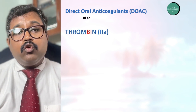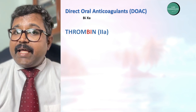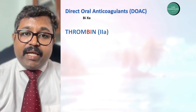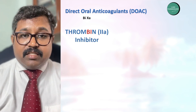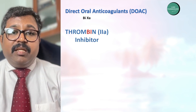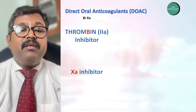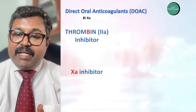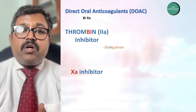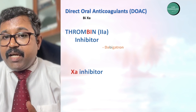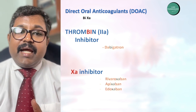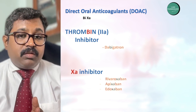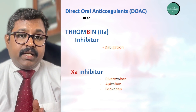We have two groups of direct oral anticoagulants: the thrombin inhibitor, also called factor 2A inhibitor, and the factor 10A inhibitor. Under thrombin inhibitor we have dabigatran, and under factor 10A inhibitor we have rivaroxaban, apixaban, and edoxaban.